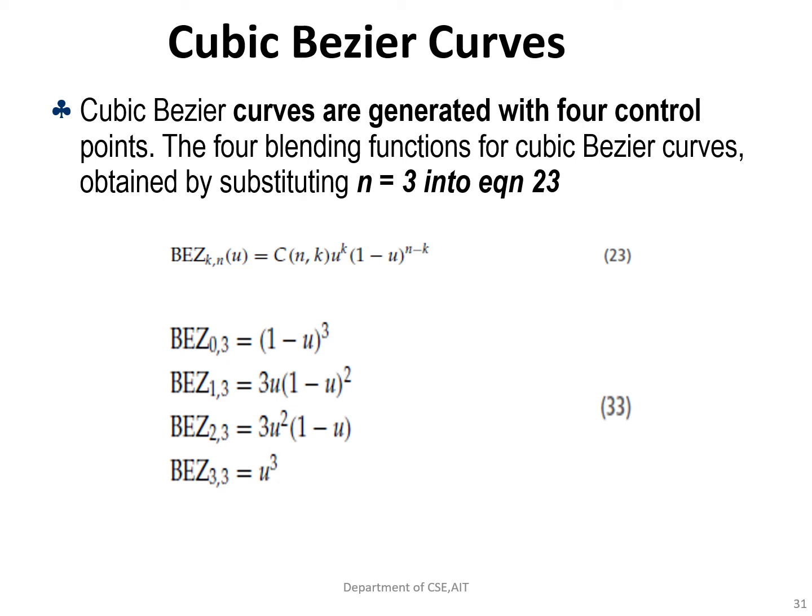Many graphics packages provide functions for displaying only cubic splines to avoid the increasing calculations required for higher order polynomials. Cubic Bezier curves are generated using four control points. The four blending functions Bez(k,3)(u) — the Bernstein polynomials — are obtained with N equal to 3 and k taking values 0, 1, 2, and 3, giving us Bez(0,3), Bez(1,3), Bez(2,3), and Bez(3,3). Depending on the binomial coefficient, these are simplified to yield equation 33.